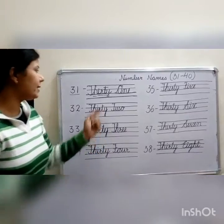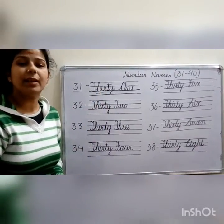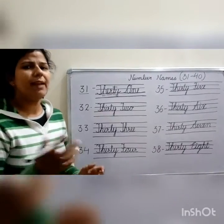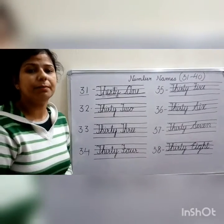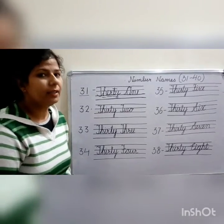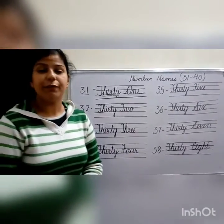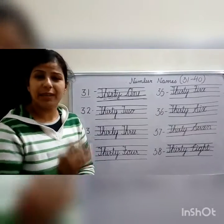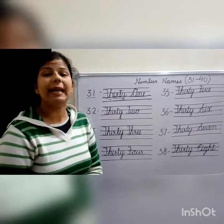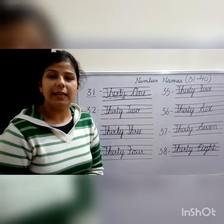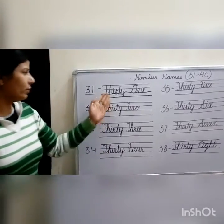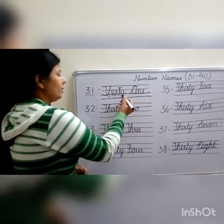See kids, I-R makes the 'ar' sound. We have so many examples of this. Like 'bird' — B-I-R-D — the I-R makes the 'ar' sound. Like 'first' — I-R makes the 'ar' sound. One more example: 'girl' — G-I-R-L — I-R sounds like 'ar'. Same like that, thirty-one.